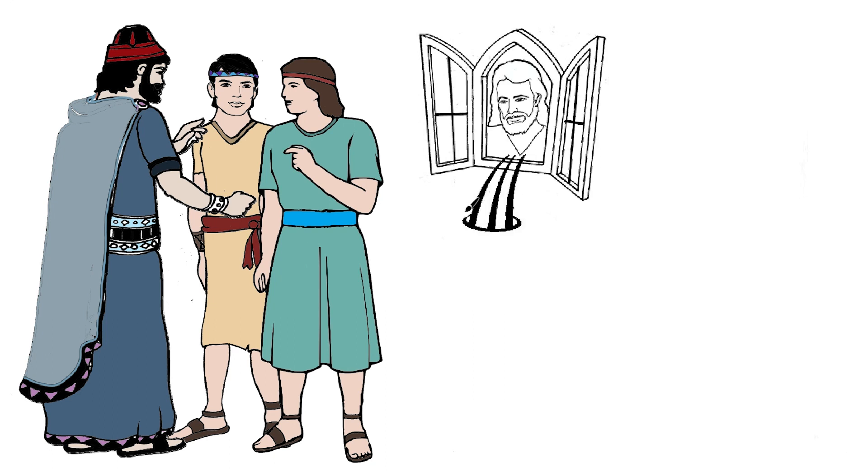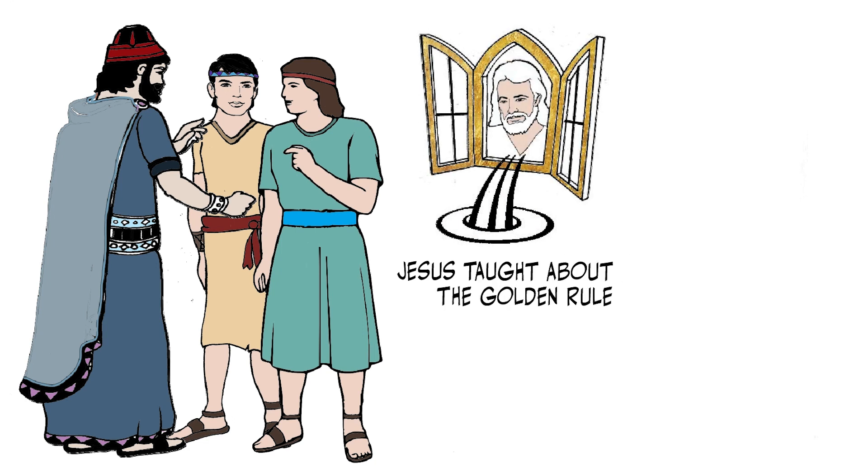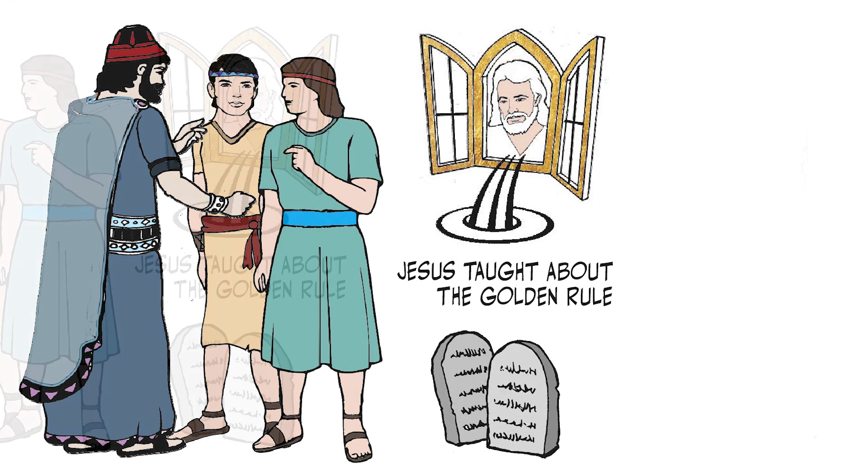The golden rule teaches that all things we would have others do to us, we should also do to them. For this is the law and the prophets. This is another name for the Old Testament, which is also called the Hebrew Scriptures.